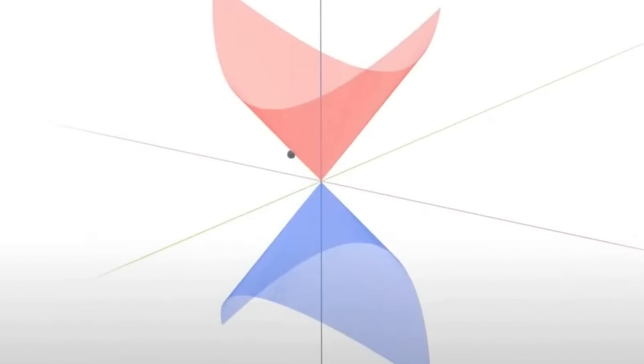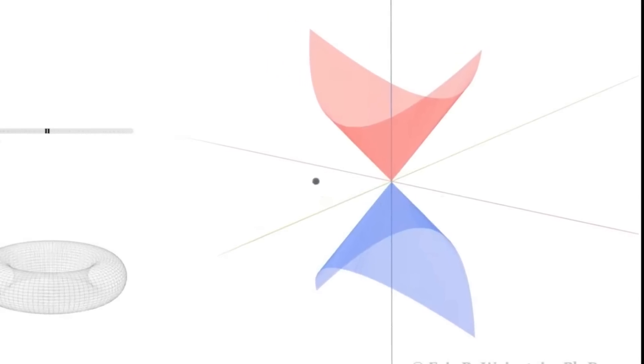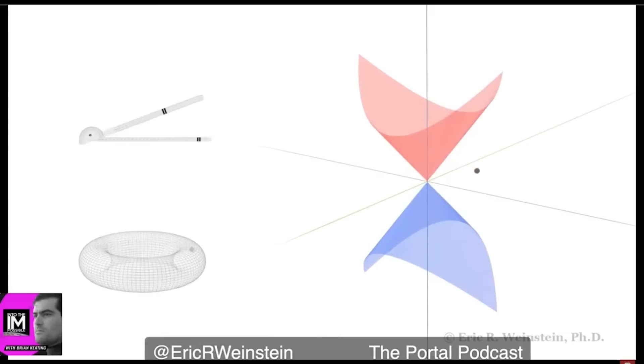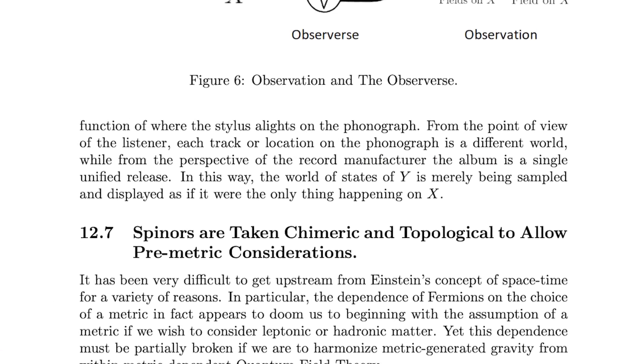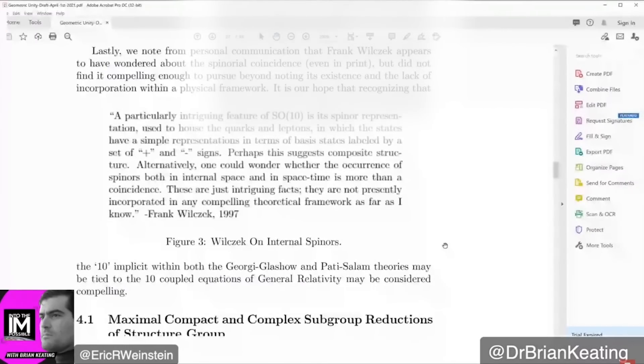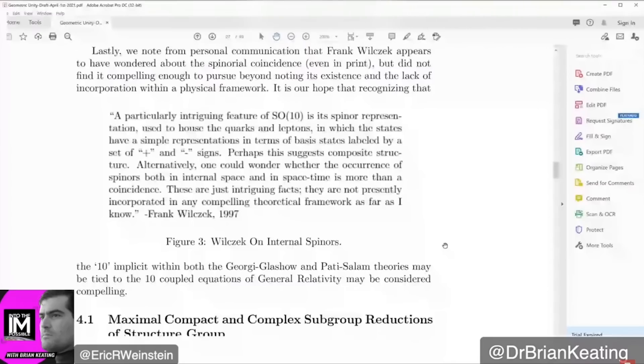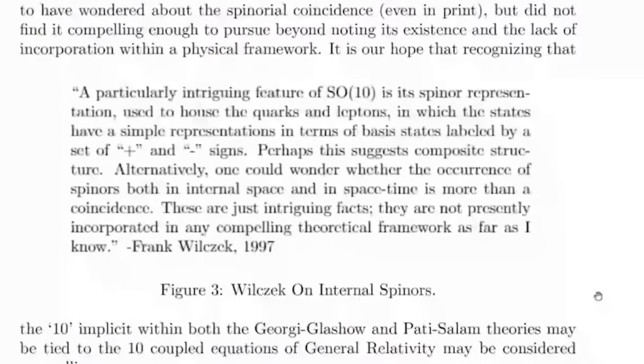So the point is that spinners on 14 look like spinners on 4 tensor spinners on some version of 10. And whether you're talking about spin 10 models, SU5 models, or SU4 cross SU2 cross SU2, which is spin 6 cross spin 4, isn't that exactly what we see in the standard model? A particularly intriguing feature of SO10, which is really spin 10, or could be spin 6 comma spin 4, is its spinner representation used to house the quarks and leptons in which the states have a simple representation in terms of basis states labeled by a set of plus and minus signs. Perhaps this suggests composite structure. Now here's the sentence that just floored me. Alternatively, one could wonder whether the occurrence of spinners both in internal space and in space-time is more than a coincidence. And then he pulls back immediately. These are just intriguing facts. They are not presently incorporated in any compelling theoretical framework as far as I know. Geometric unity is that compelling framework.